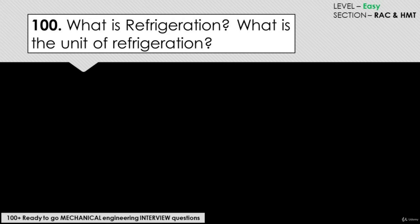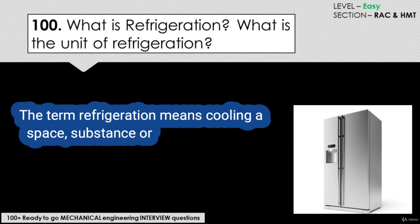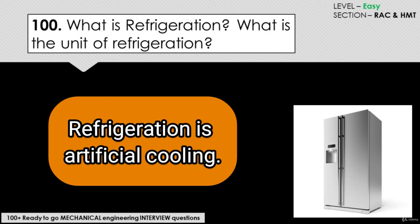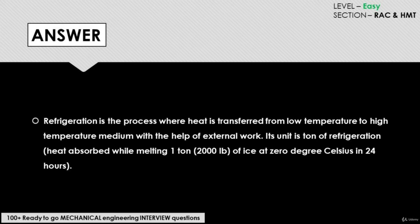What is refrigeration and what is the unit of refrigeration? The term refrigeration means cooling a space, substance, or system to lower and maintain its temperature below the ambient temperature — in other words, artificial cooling. Energy in the form of heat is removed from a low temperature reservoir and transferred to a high temperature reservoir. Refrigeration is the process where heat is transferred from low temperature to high temperature medium with the help of external work.